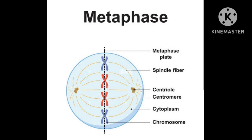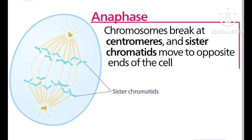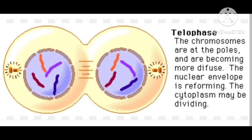Now begins anaphase. To state simply, the spindle fibers contract to bring about the physical separation of sister chromatids. Then the chromatids migrate towards the opposite poles.